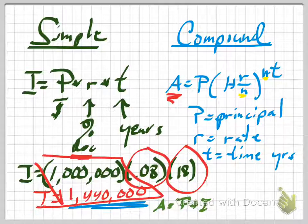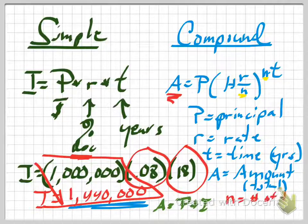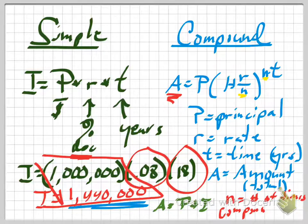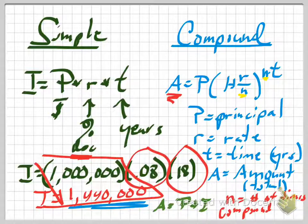N stands for the number of times per year we stop and figure out the interest and add it to the account. If I'm getting 8% per year but I only do the interest for half a year, I'm not getting 8% for six months — I have to divide the interest rate in half. That's what the N does. A is the total amount at the end, and N is the number of times per year that we compound the interest.